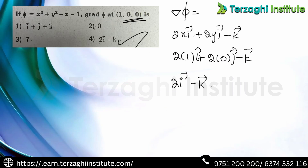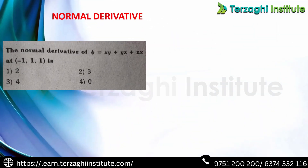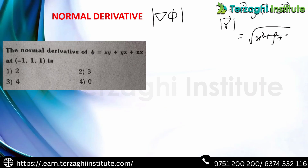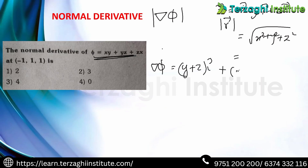So: differentiate x for i, y for j, z for k, then substitute the given point. Next topic: normal derivative. Here φ = |r|, where r vector = xi + yj + zk. The modulus |r| = √(x² + y² + z²). We need del·φ = ∇|r|. Differentiating: ∇φ = (y+z)i + (x+z)j + (x+y)k.